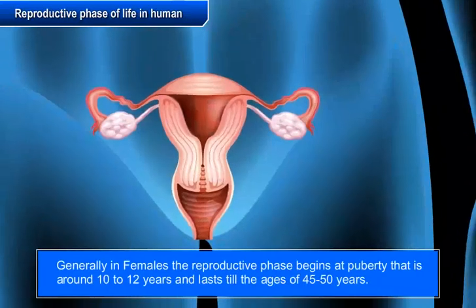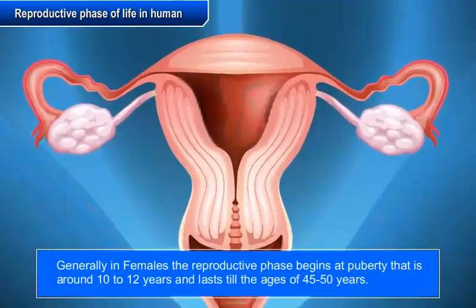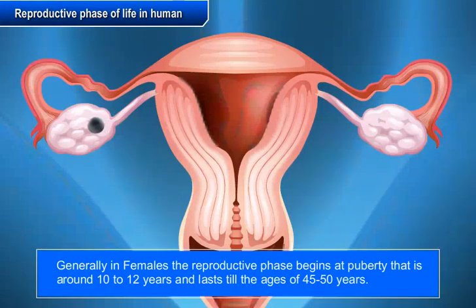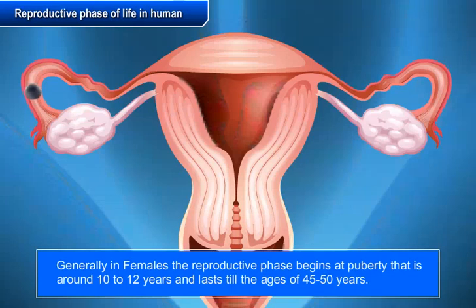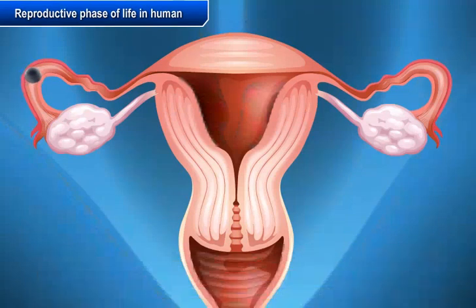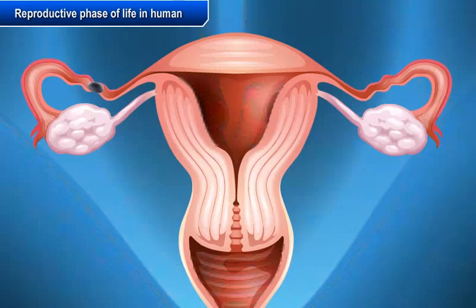Generally in females, the reproductive phase begins at puberty, i.e. around 10-12 years, and lasts till the age of 45-50 years. Maturation of the ovum begins at the onset of puberty, and one matured ovum is released by one of the ovaries.